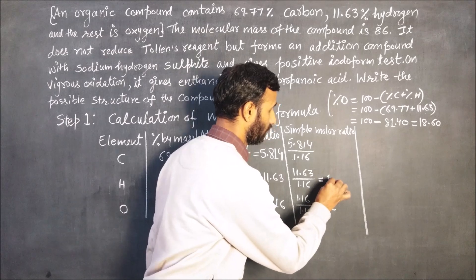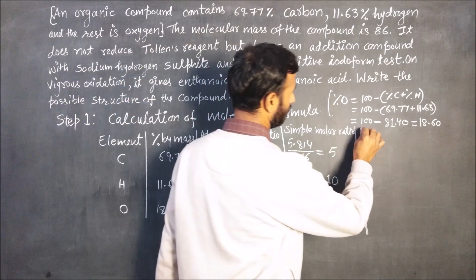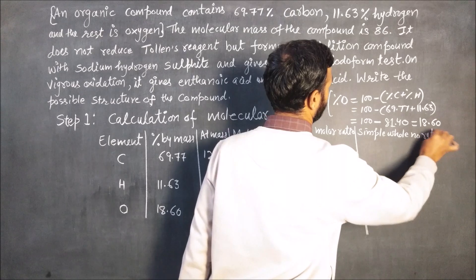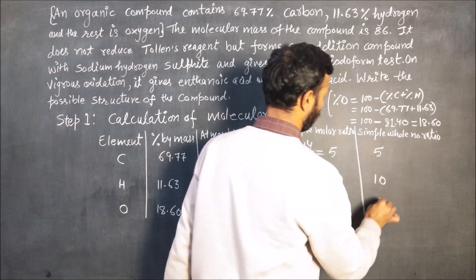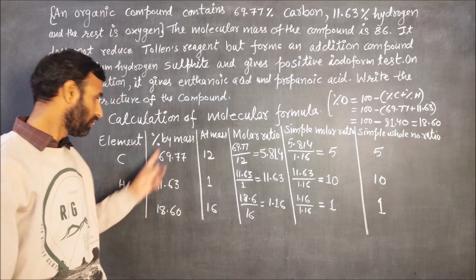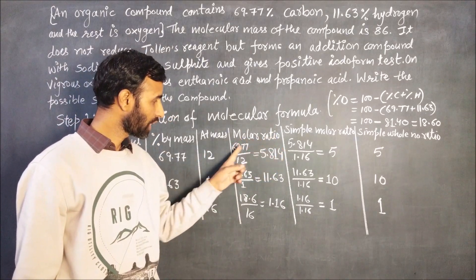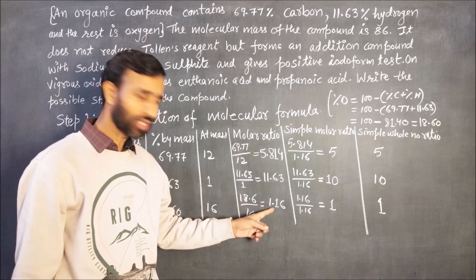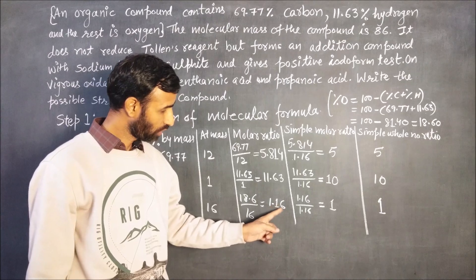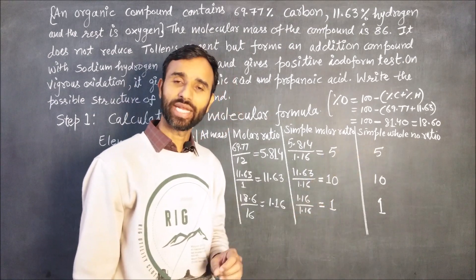It is about 10 and it is about 5. So simple whole number ratio is 5, 10, 1. This is the method to calculate empirical formula: write the name of the elements, write their percentage by mass, atomic mass, then calculate molar ratio. In molar ratio, percentage by mass is divided by atomic mass. Get the values, calculate simple molar ratio, just divide all the three by the minimum value.